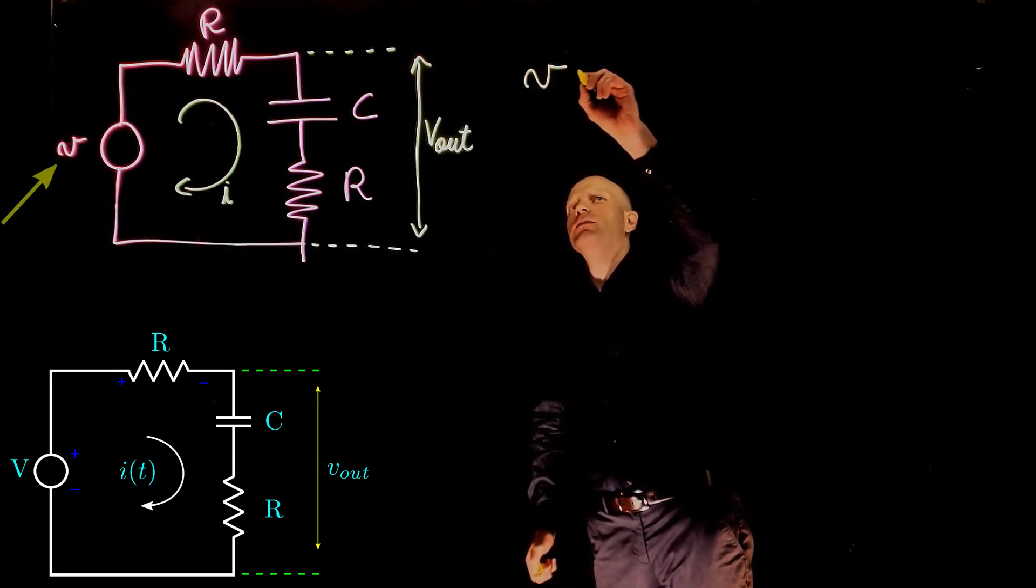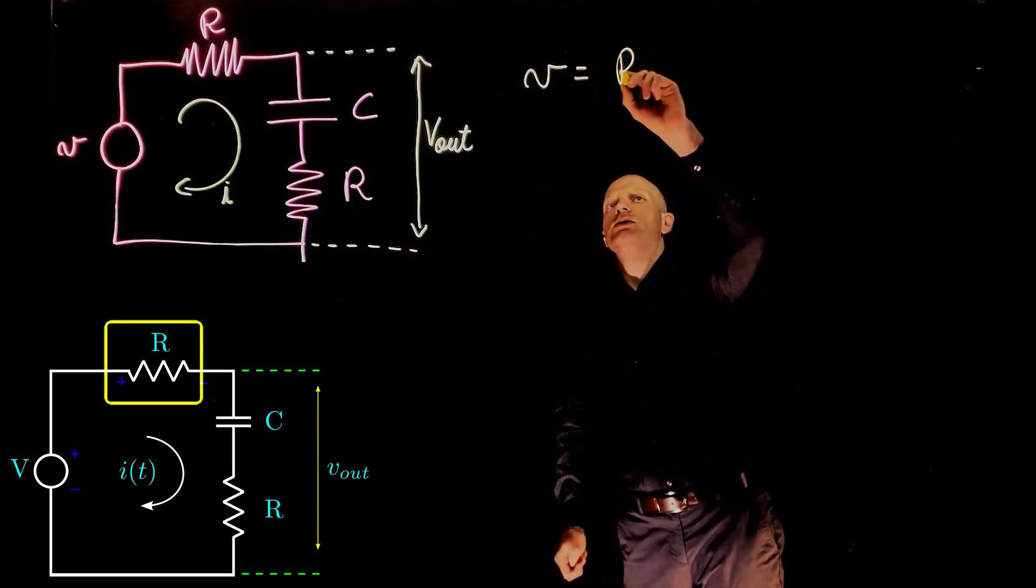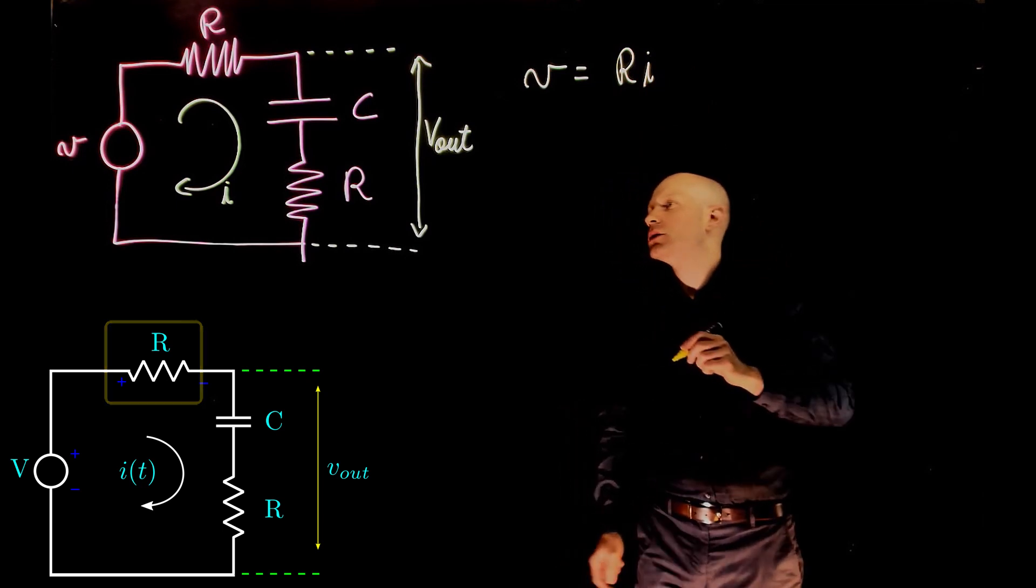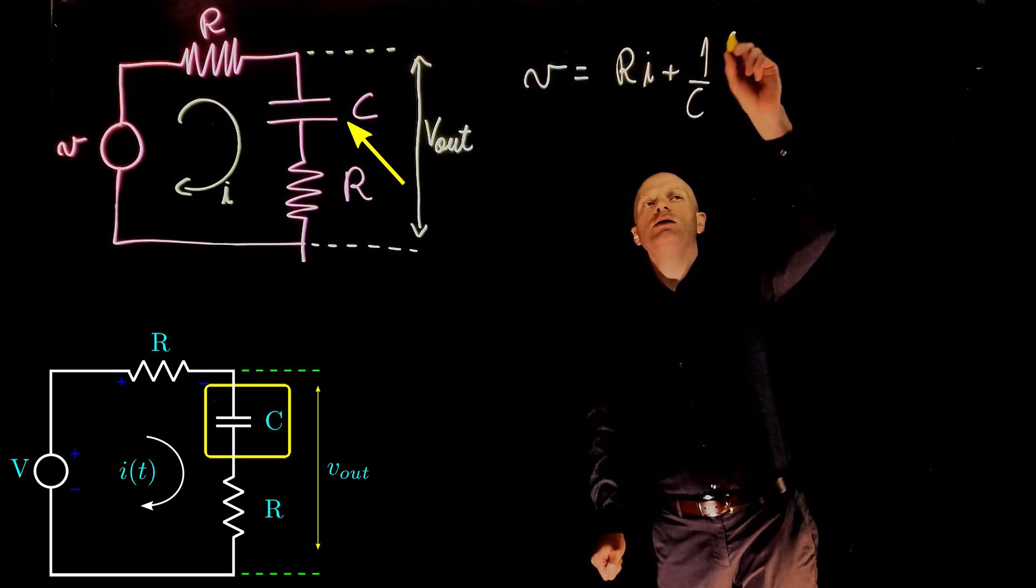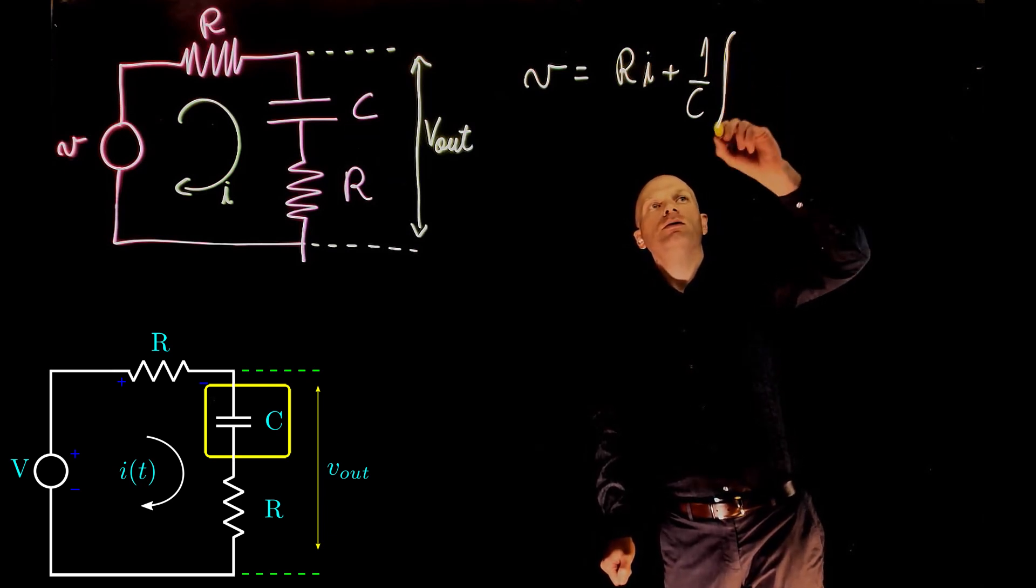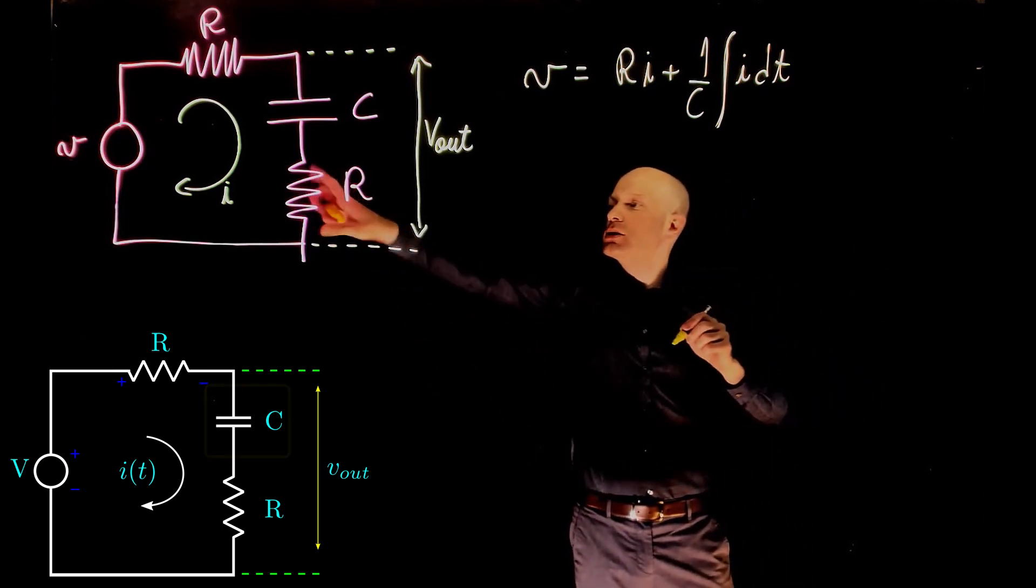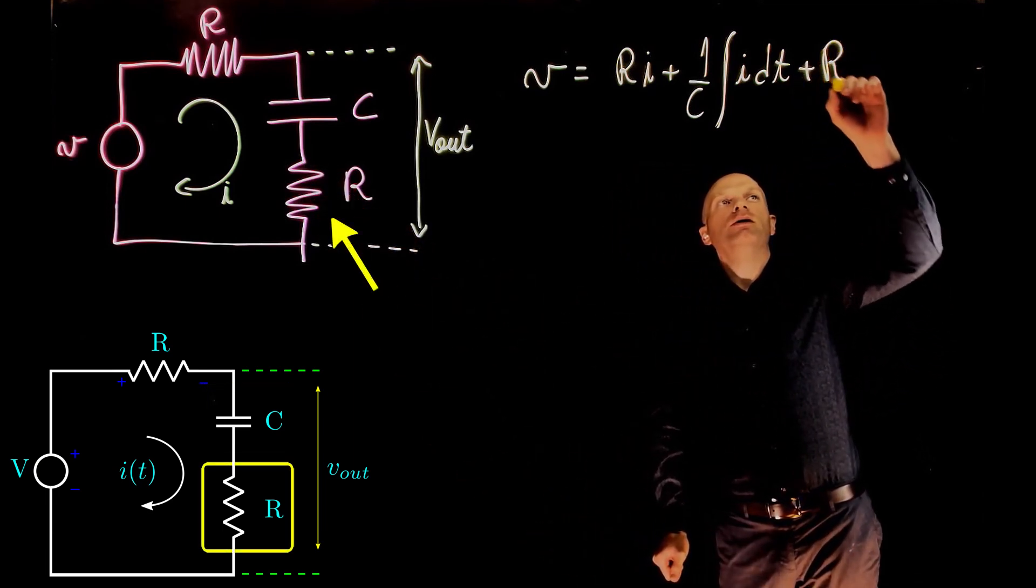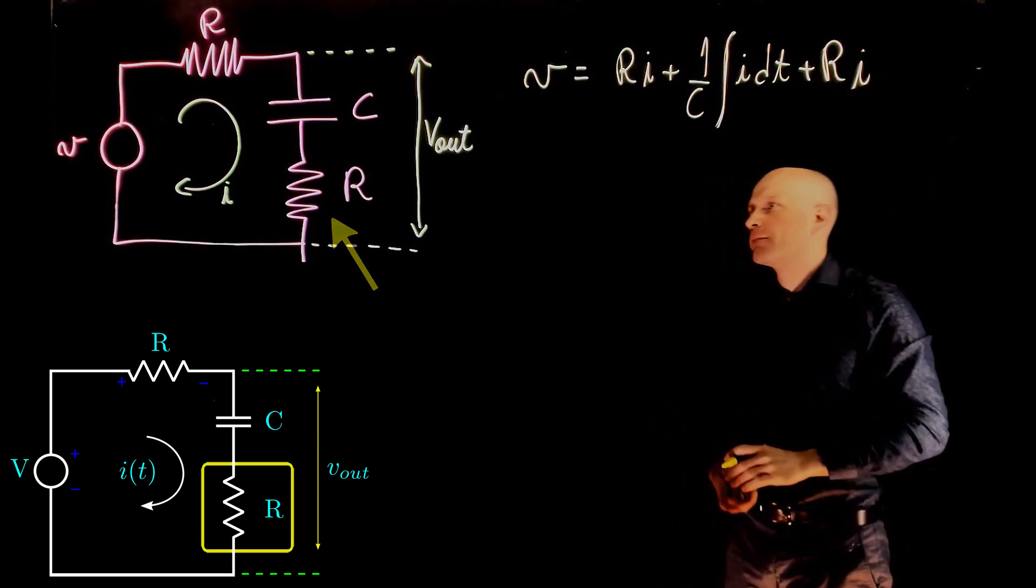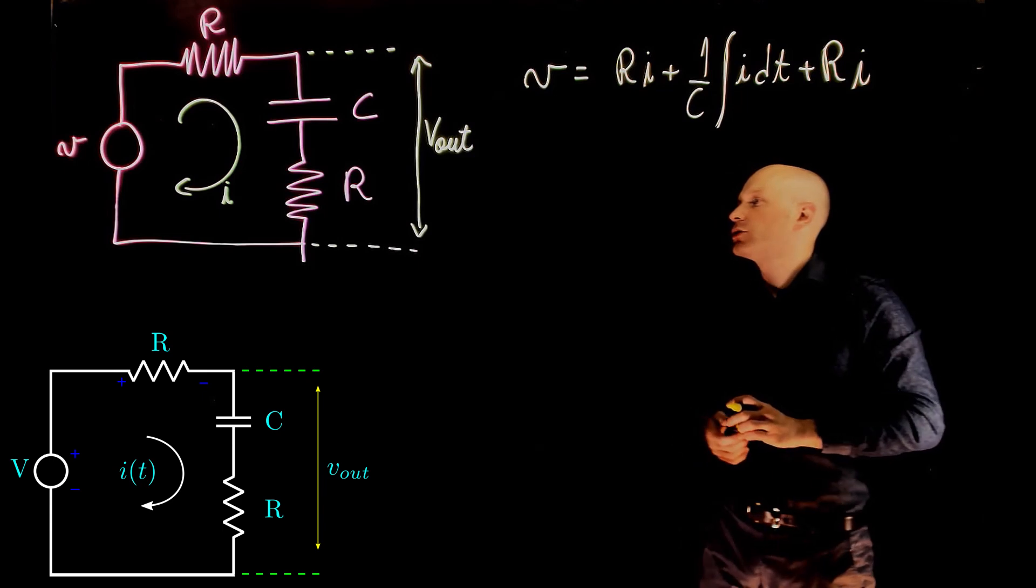We can then write V equals to the voltage drop across R, that is the resistance times the current, plus the voltage drop across the capacitor, that is 1 over C integral of the current, integral of I dt, plus the voltage drop across the other resistor, plus R I. So this now gives us a relation between I and the input voltage V.